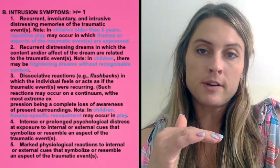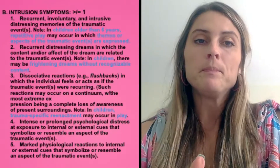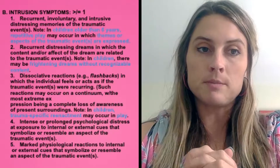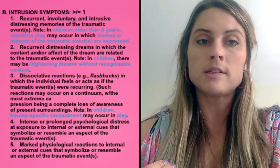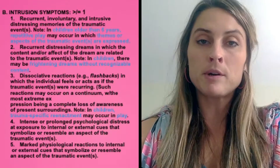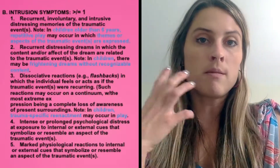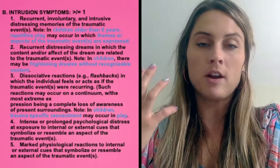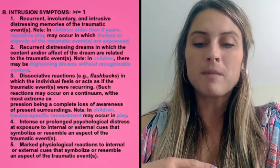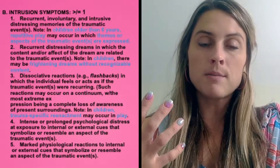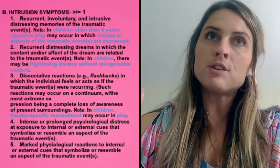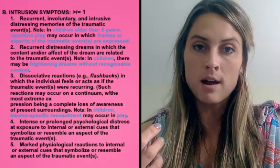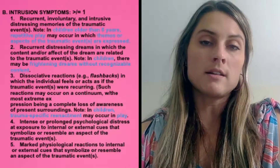The next set of criteria, Criterion B, are a set of intrusive symptoms. This could be recurring or involuntary intrusive distressing memories of the event that just come into your thought processes and you're wondering why this memory is here. It's disturbing — not like a normal memory such as 'I need to take out the trash.' It comes at unwanted times and is often disturbing.